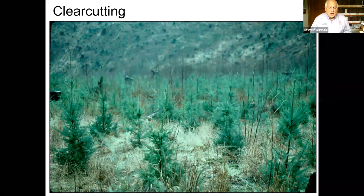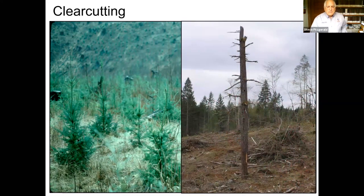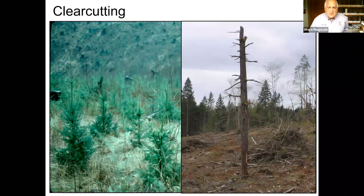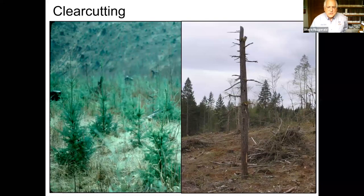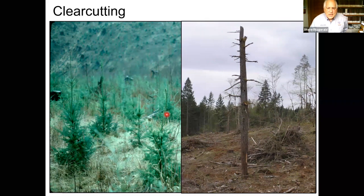When it comes to clear cutting these days, if it's above 25 acres, you're required to leave some live trees for future wildlife habitat and snags. If you already have some snags, that's great — if you can keep them and they don't pose a danger to your operator. This one here has a cavity right there if you can see it.